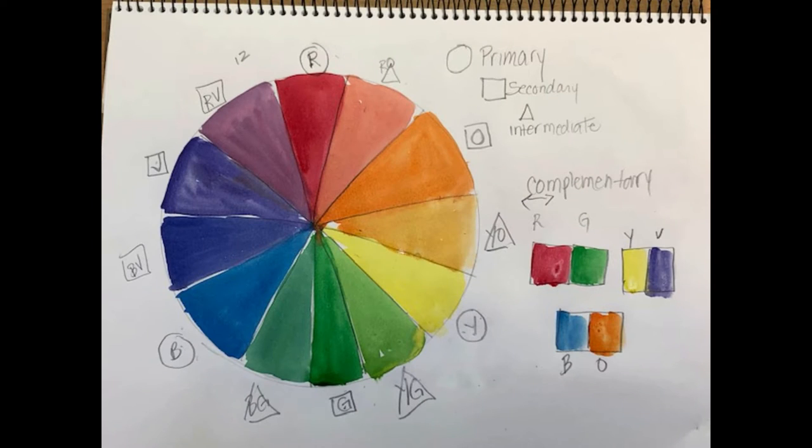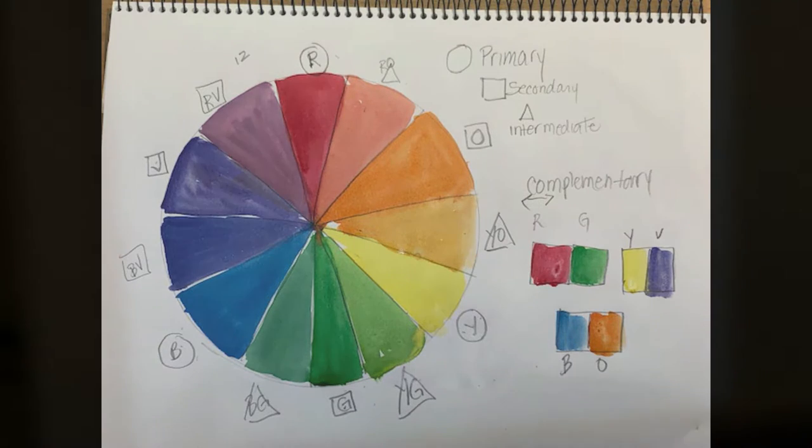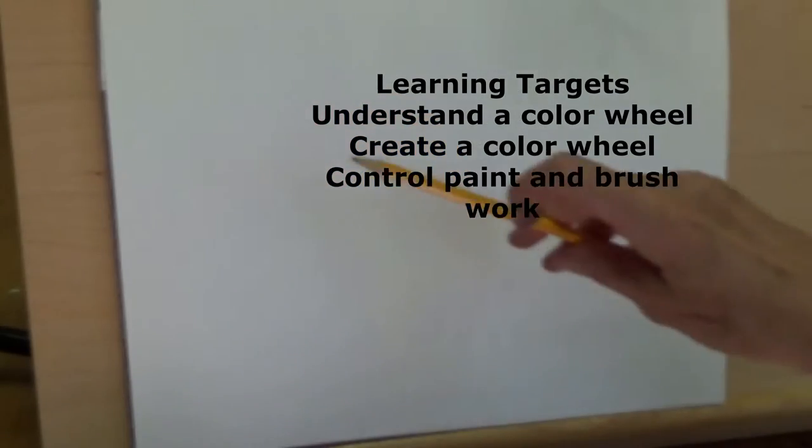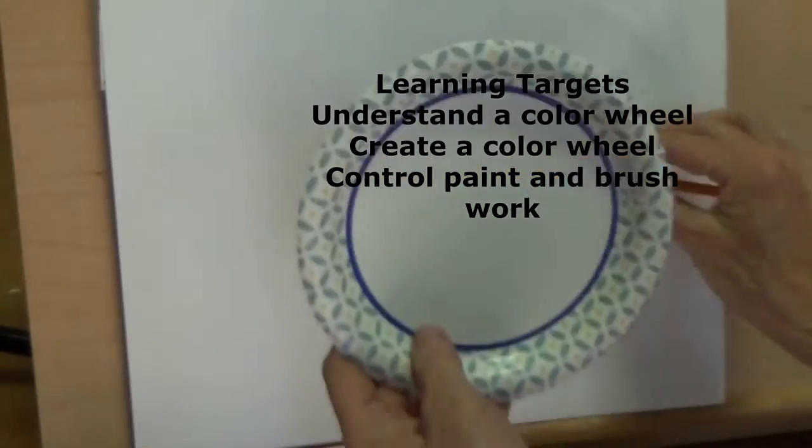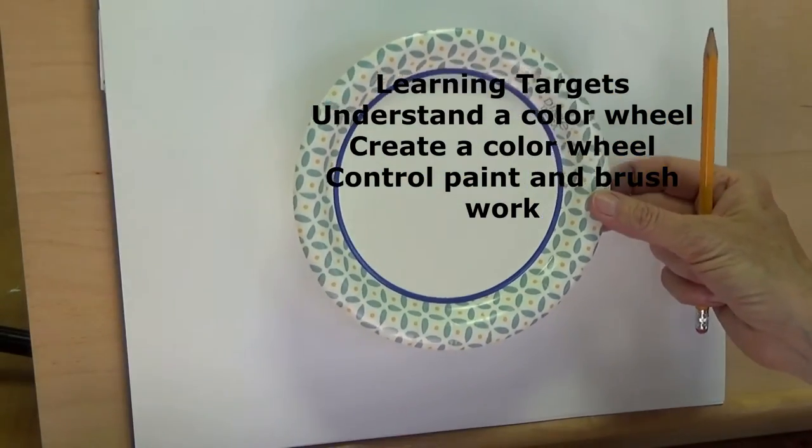Time to make our color wheel. We've done some practice runs and messed around with the paint a little bit. Now it's time to make a color wheel, so we're going to learn about a color wheel, understand it, create it, and as usual, control the paint.